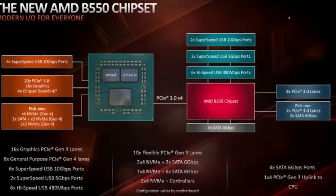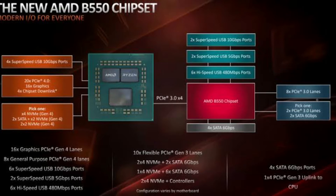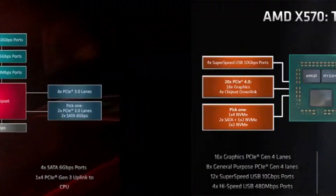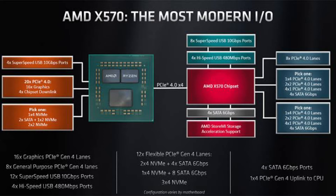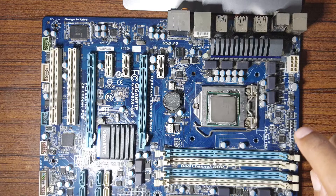Similarly, the AMD B550 is a mid-range chipset for Ryzen processors. It offers 10 user accessible PCI lanes, and you can look at the blocks to see how a motherboard with this chipset can potentially be configured. Finally, the AMD X570 is a high-end chipset found on premium AMD motherboards. It offers 16 user accessible PCI lanes, though how these lanes are distributed and how the slots are configured differs from motherboard to motherboard.